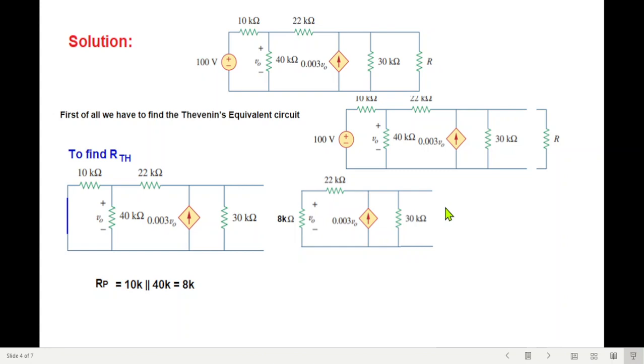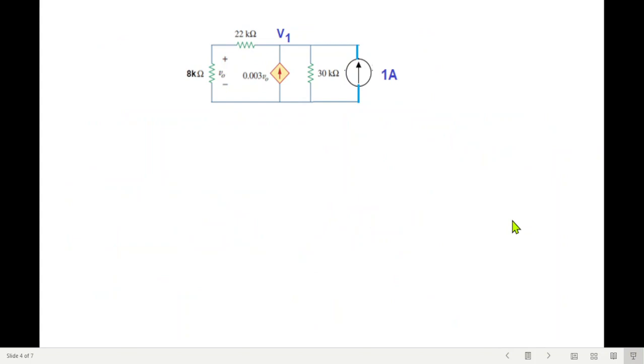One, we can connect a test current source, we can connect a test voltage source of 1 volt, and the third is we can short circuit and find the short circuit current. What I'll do is connect a current source of 1 ampere, also naming this point as V1. So from here, how to find R Thevenin? This will be the formula that we'll be following: this voltage divided by this current will give us the resistance R Thevenin.